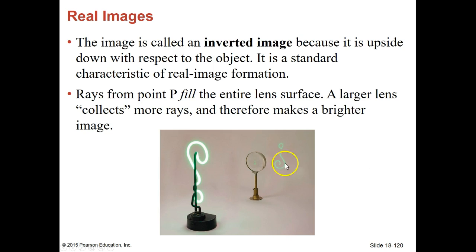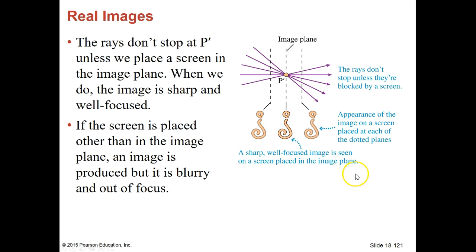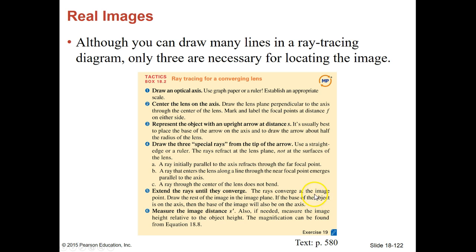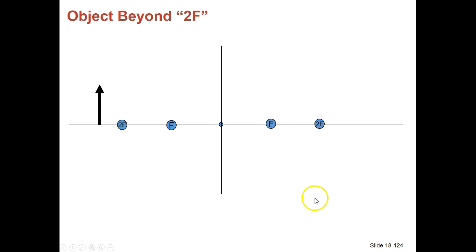Real images are inverted here because they're upside down. You can read here about how the rays don't stop at P prime unless we place a screen in the image plane — if you do that, you should get a sharp and well-focused image. If you place that screen anywhere else, the image will be a little bit blurry. So as long as we're right on that image plane, you should get a really nice focused image. The next section shows how to draw all of those different ray diagrams for lenses — we're going to do that in class.